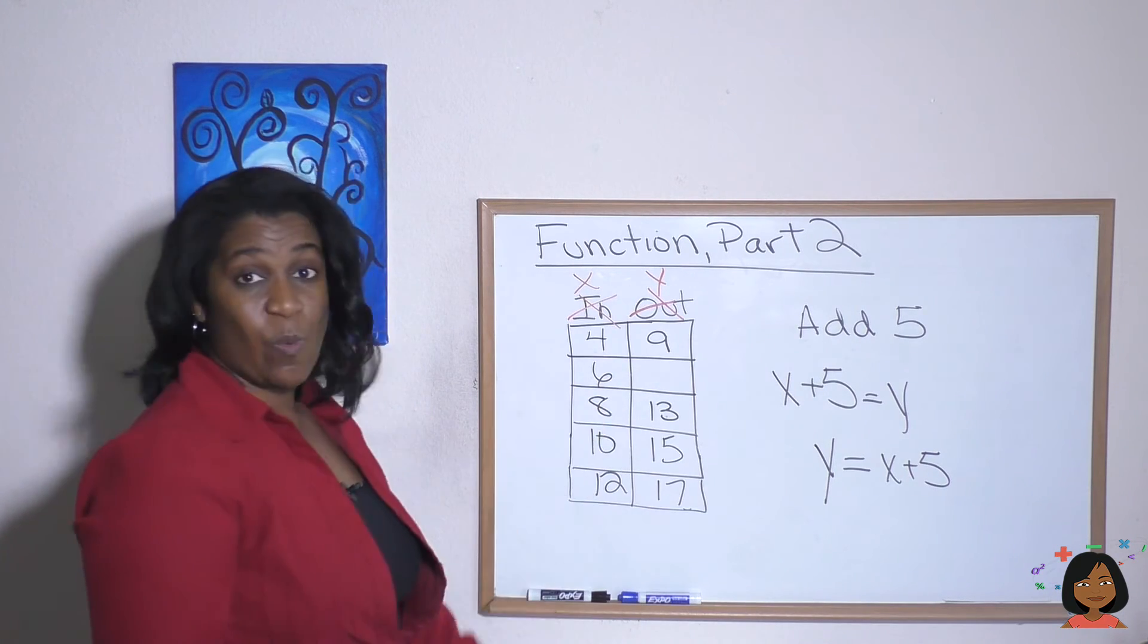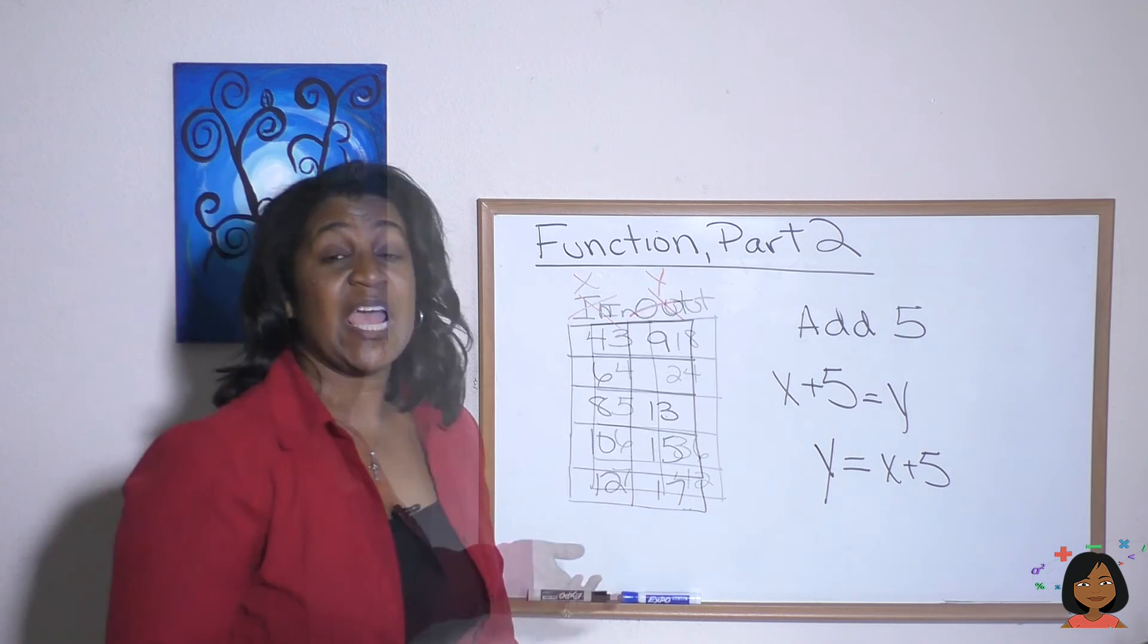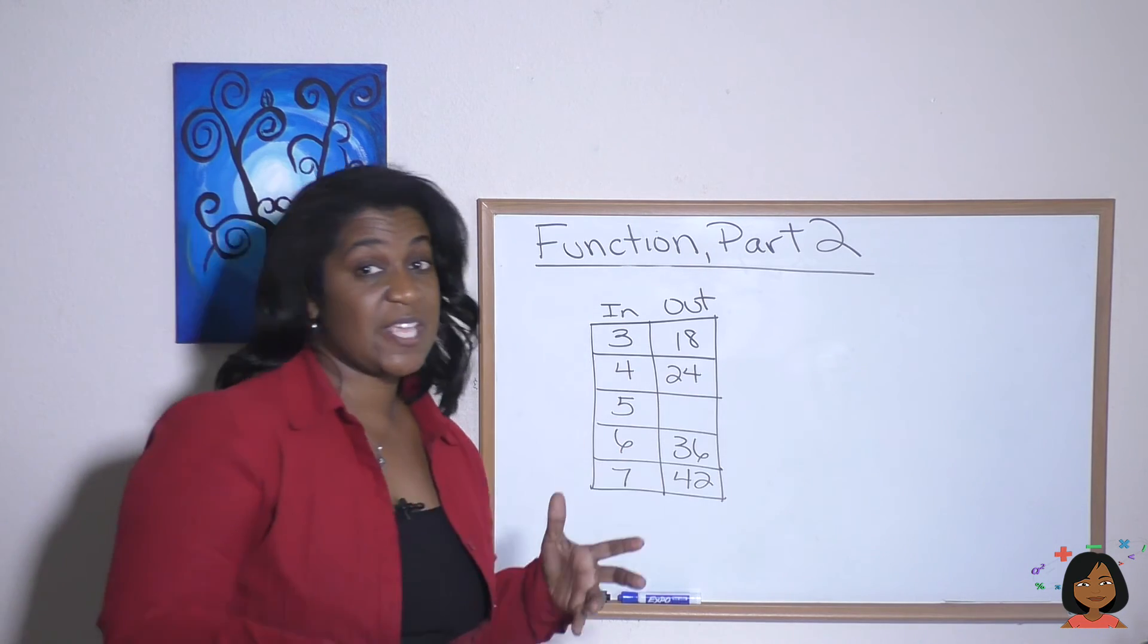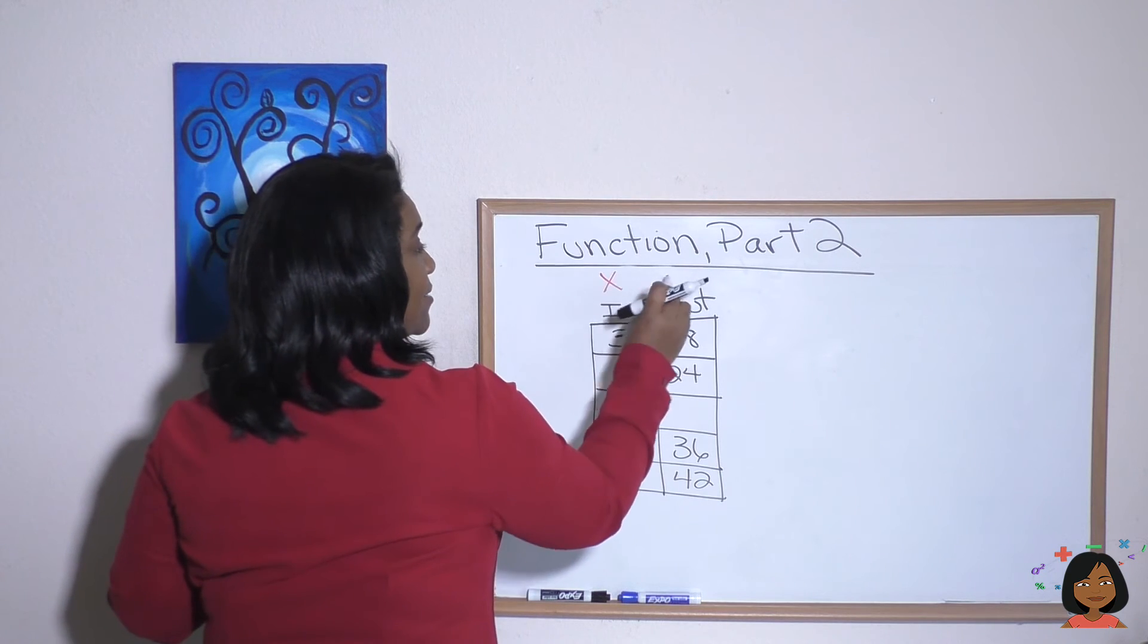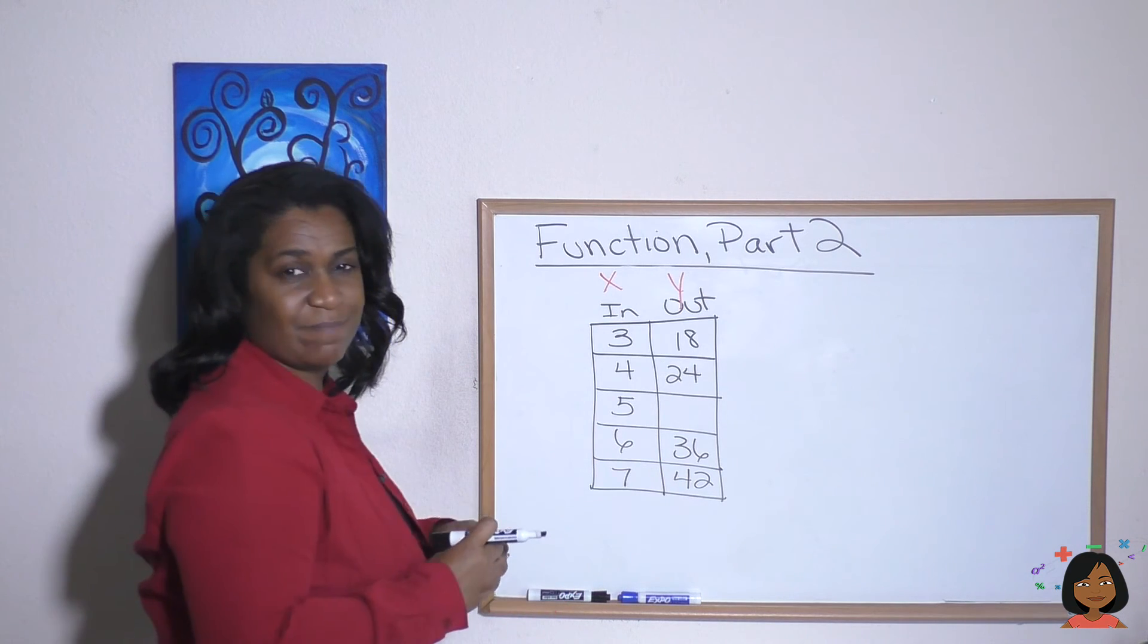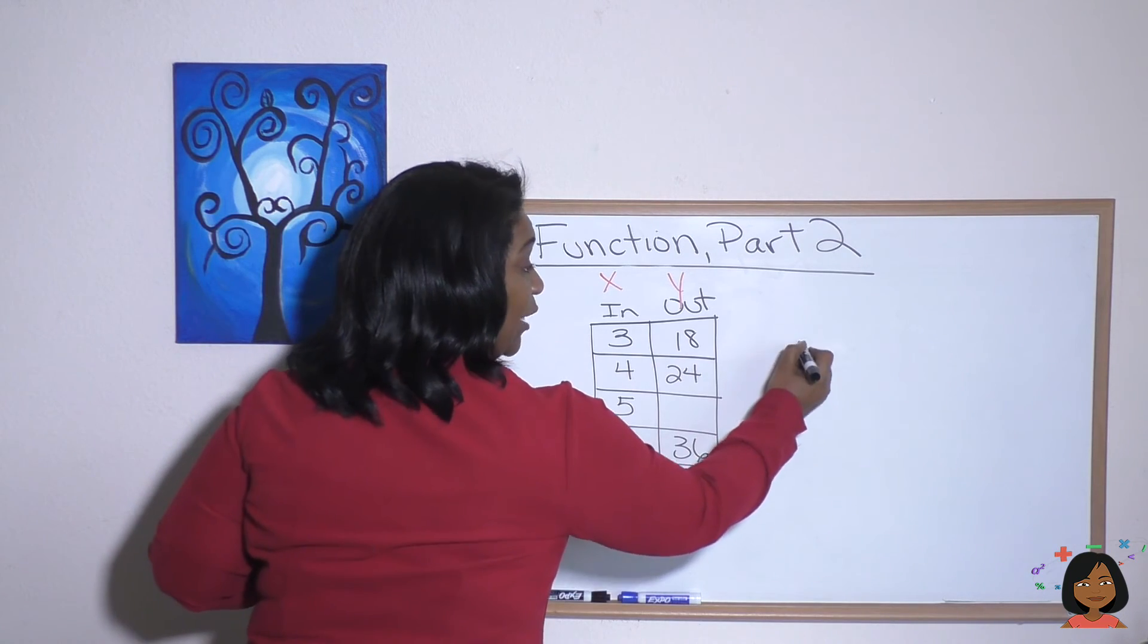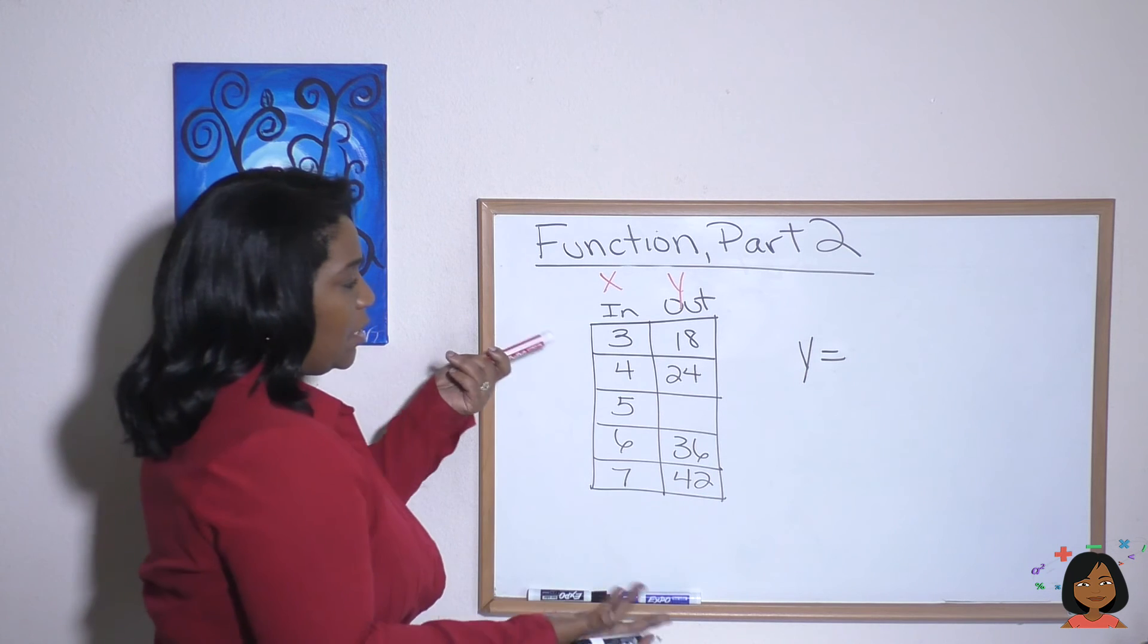So let's try one more example where we convert our in and outs to X's and Y's. Here's our function. We have our in column and our out column. But instead of using in and out, we're going to use variables. We're going to use an X and a Y instead. So tell me, how do we come up with our missing number? So even just our whole Y column, we're going to start with Y equals, let's figure it out.